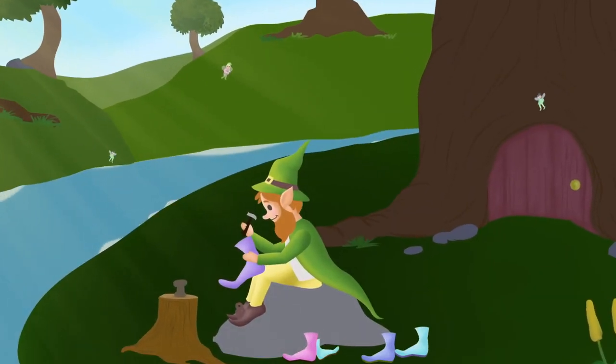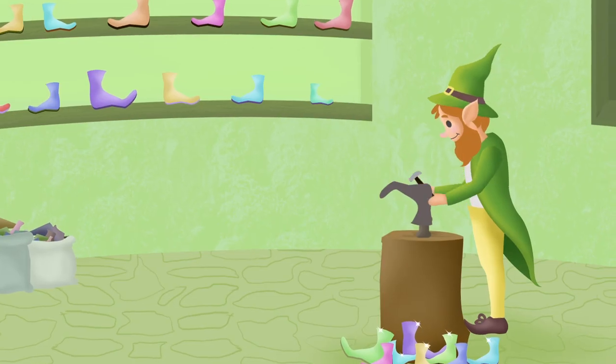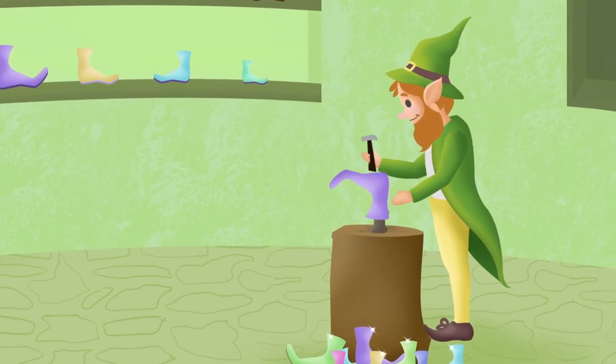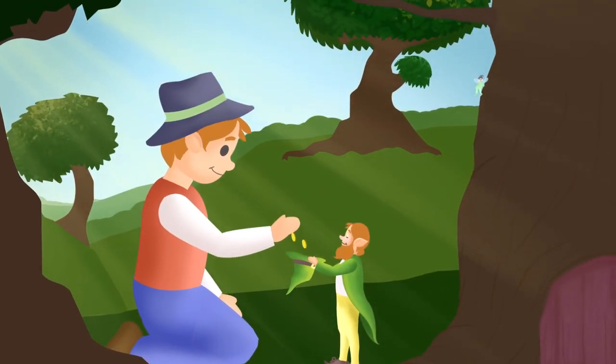Once upon a time there lived a little man in the woods. He was a shoemaker and he would make green, gold, and lavender shoes for the people who lived in a nearby village. People paid the leprechaun with coins of gold.